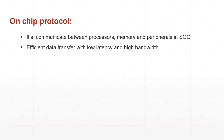To communicate between these things — processors, memory, and peripherals — we need to use some set of rules, and that is what we call the on-chip protocol. So why is this protocol needed? That is an important question.